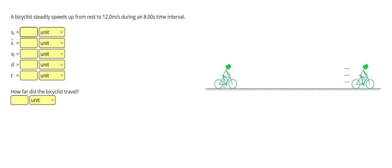In this problem, we're going to take the things that we've learned already and combine them together. A bicyclist steadily speeds up from rest to 12 meters per second during an eight-second time interval.